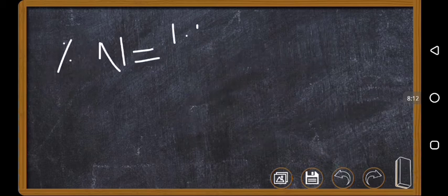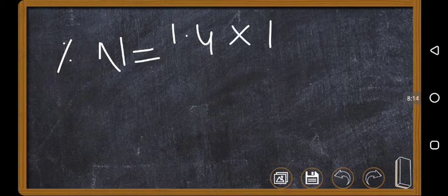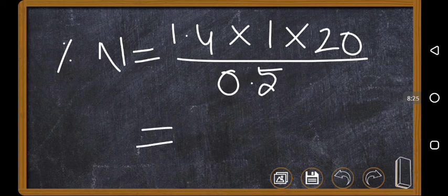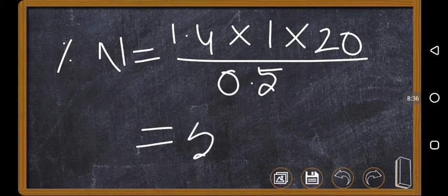Now applying the formula: percentage of nitrogen = 1.4 × N × V / mass of organic compound = 1.4 × 1 × 20 / 0.5 = 56%. So the percentage of nitrogen in the compound is 56%.